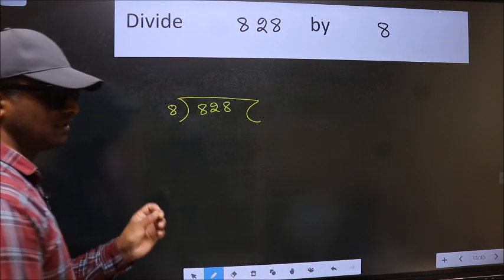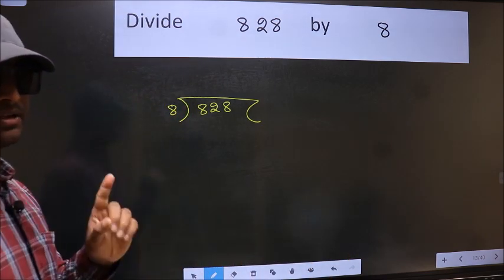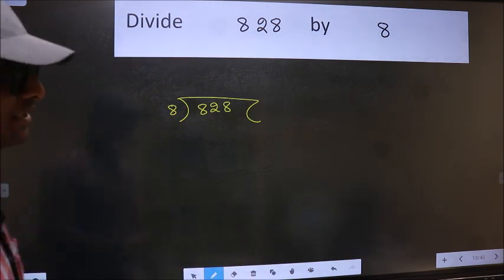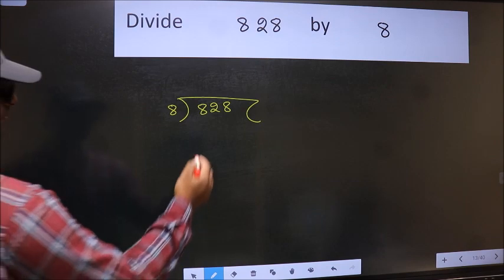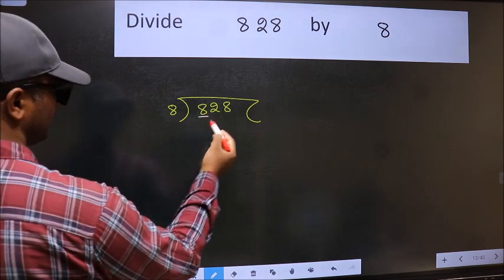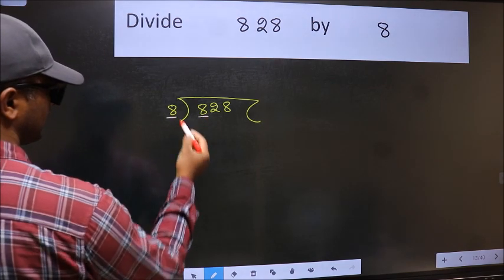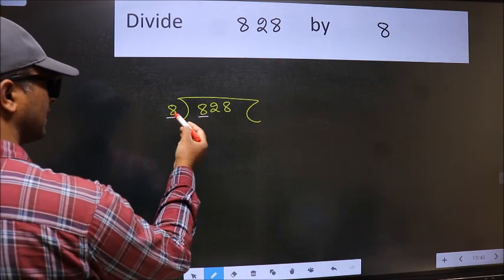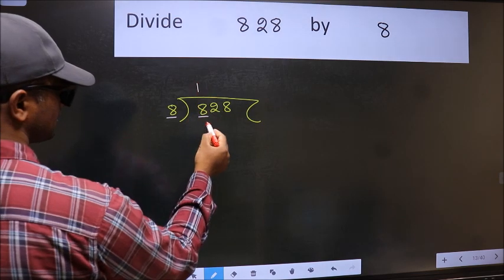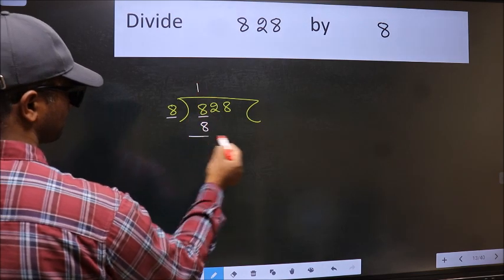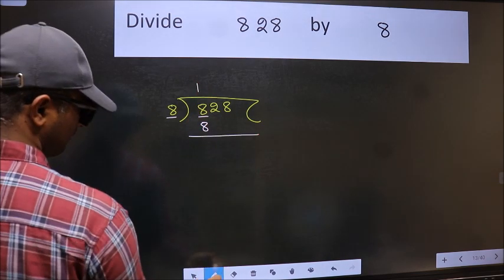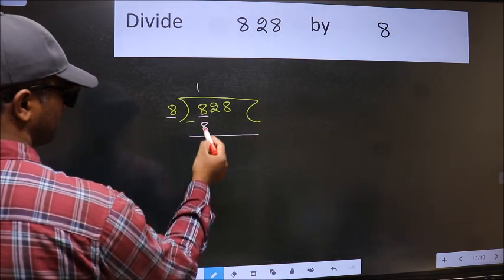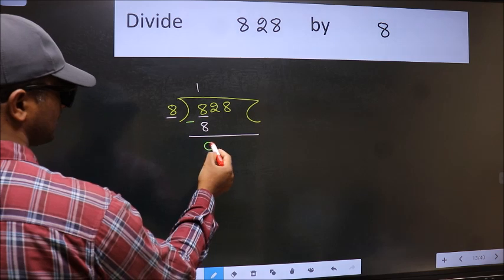This is your step 1. Here we have 8 and here 8. When do we get 8 in the 8 table? 8 ones are 8. Now we should subtract. We get 0.